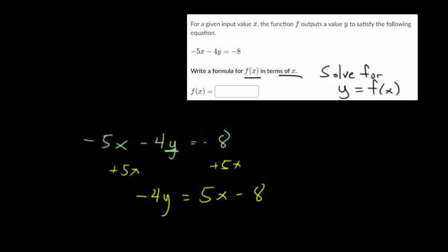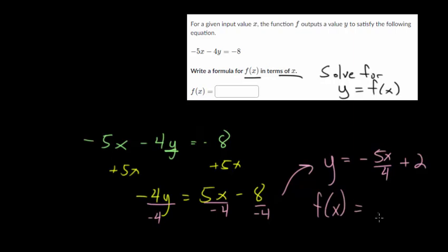To get y by itself, we want to divide everything by -4. When we do that, this just becomes y, since something divided by itself is always 1. We get -5x/4, and then -8 divided by -4 would be positive 2. Remember, y is f(x). So we can conclude that f(x) is this linear function -5x/4 + 2. This right here is what we would put in as our answer.